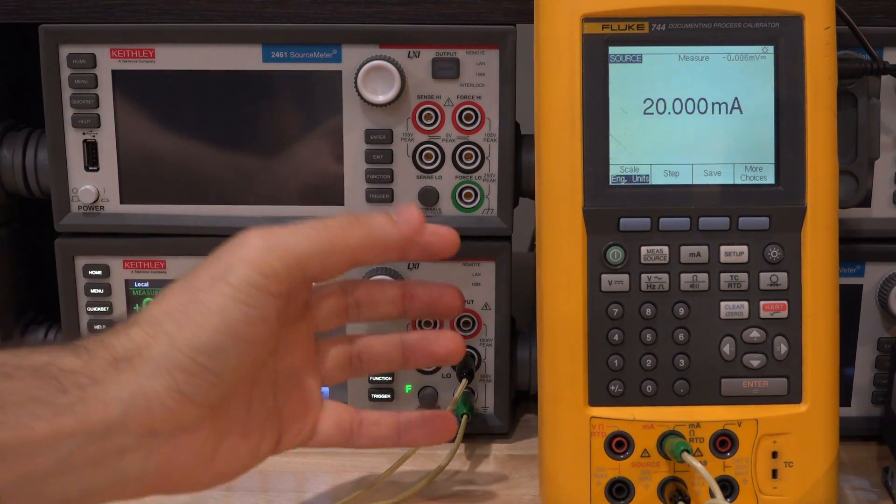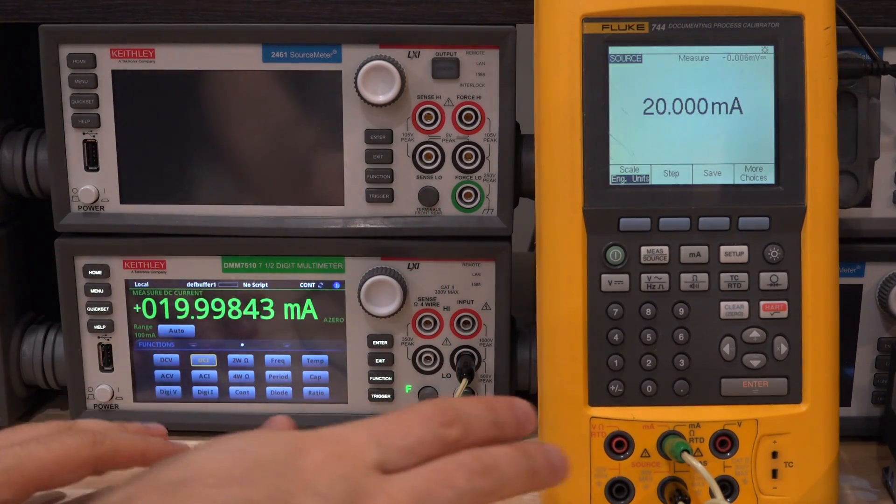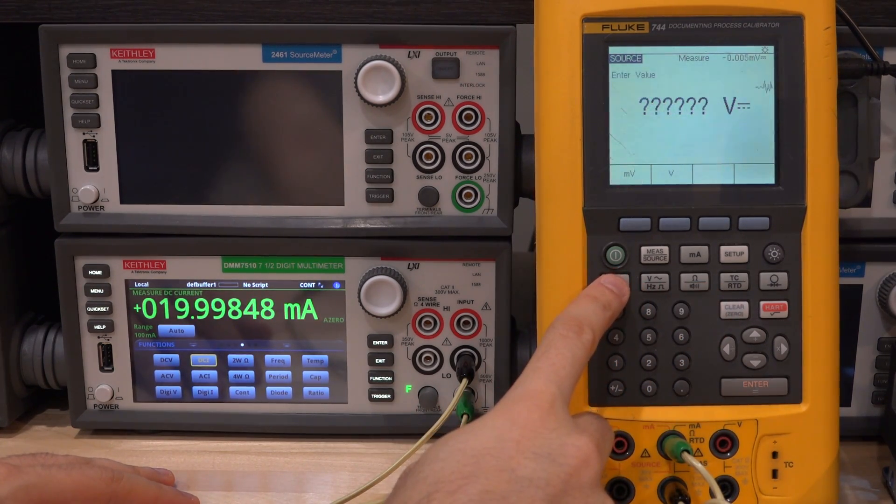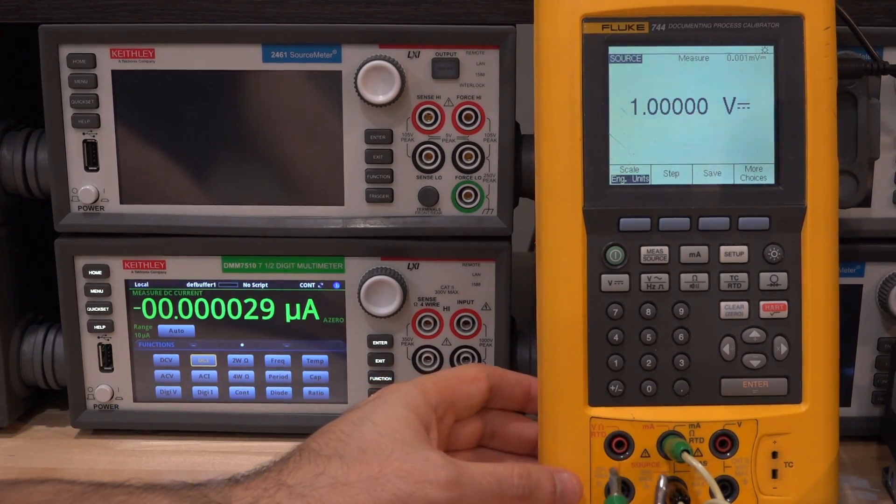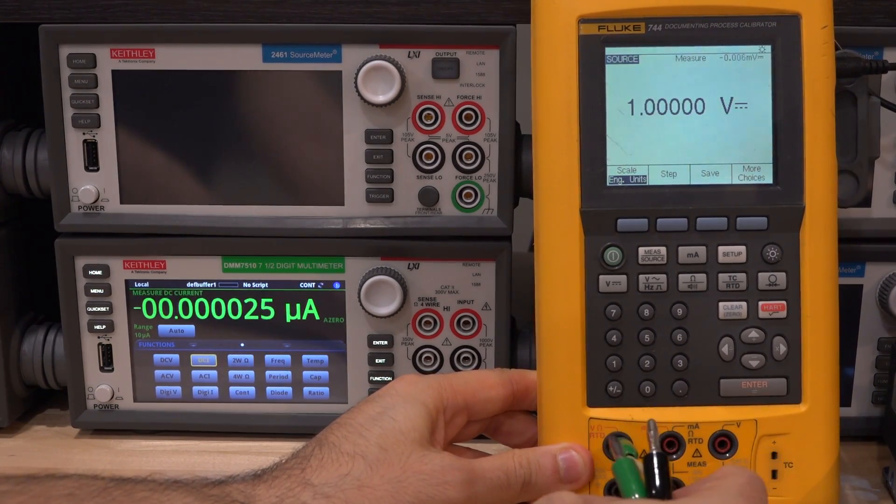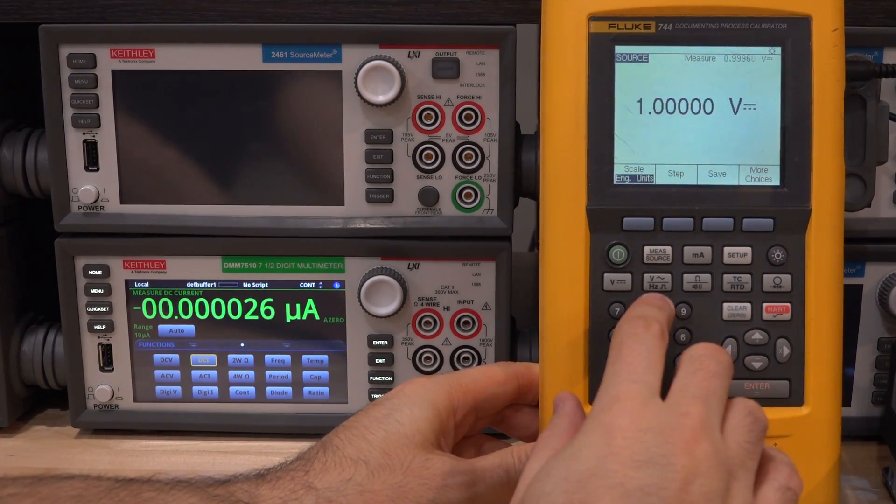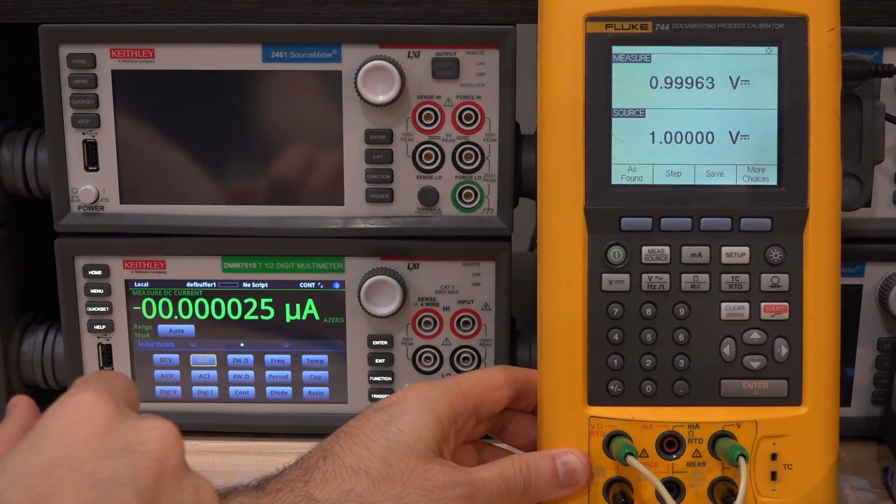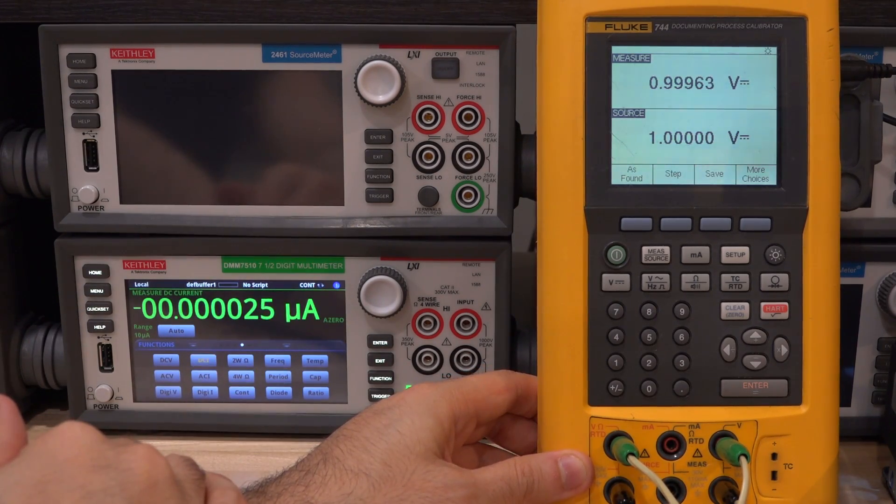Now this catches the source capability but it doesn't really show the measurement capability. Since we know that the source capability works, for measurement we can just put it back onto itself. Let's go back to voltage creation here. You can do one volt. Disconnect that. That's fine. You can put that back over here and feed it back onto itself. If I press this, there you go, look at that. It's measuring itself at 0.99963, so it's a little bit different than what it was on the Keithley. Obviously because it's not the same calibration. But it looks good.